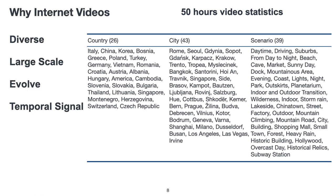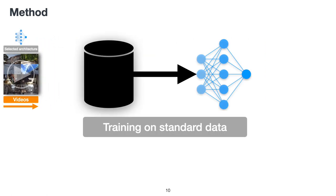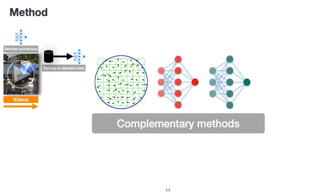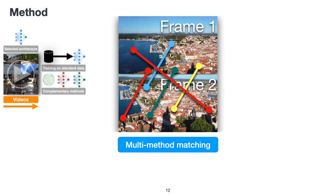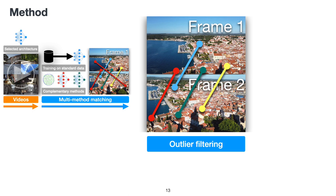Second, the temporal coherence of videos allows us to create effective supervision signals without time-consuming structure-from-motion or manual labeling. The key idea of GIM is self-training using unlabeled internet videos. Given a new image-matching architecture and the downloaded internet videos, we first train the model on standard image-matching datasets. Then we collect several complementary image-matching methods, which can be either handcrafted or learning-based. Next, we perform multi-method matching, which finds dense matching between nearby video frames using the model trained on standard data and the complementary methods.